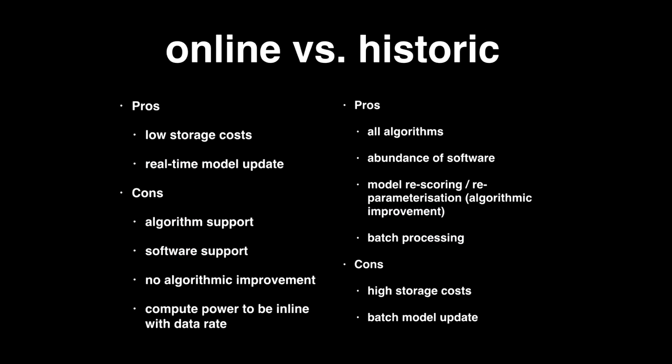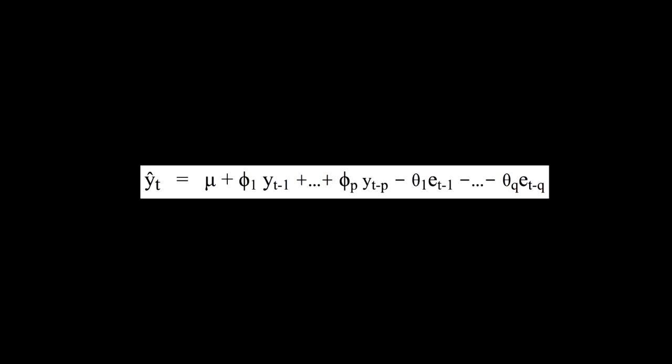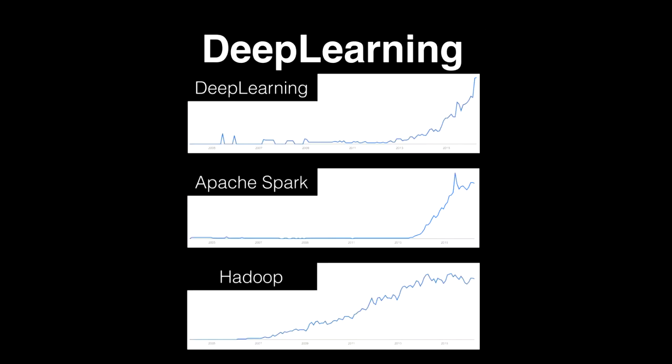You basically have to do both, and for that there is something called the Lambda architecture, which supports both stream and batch processing. As a placeholder for traditional algorithms, the ARIMA model is a time series forecasting model based on regression, but it performs very badly compared to the new class of deep learning algorithms. Here you can see Google Trends charts for deep learning starting 2013, Apache Spark from 2013, and Hadoop from 2007.